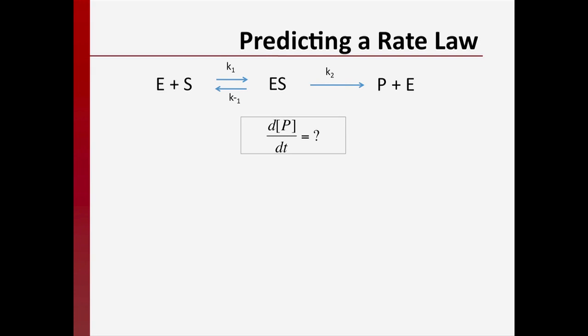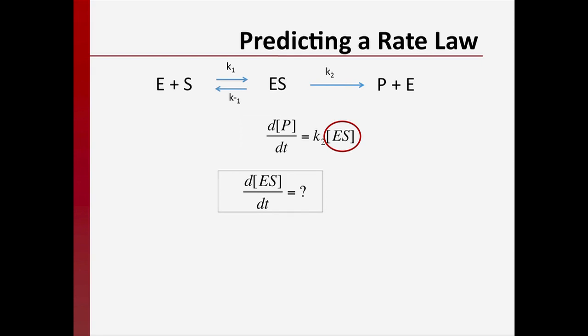From the second step of the reaction mechanism, we can write that the rate of the formation of the product is equal to the rate constant k2 multiplied by the concentration of our enzyme-substrate complex. The enzyme-substrate complex is a reaction intermediate and is not something that is easily measured in our experiments. So it would be nice to restate this rate in terms of quantities that are more easily measured in the laboratory, such as the substrate concentration and the initial enzyme concentration. To get an expression for the concentration of the enzyme-substrate complex, let's write a differential equation for the net rate of change of the enzyme-substrate complex concentration with time — we'll call that d[ES]/dt.